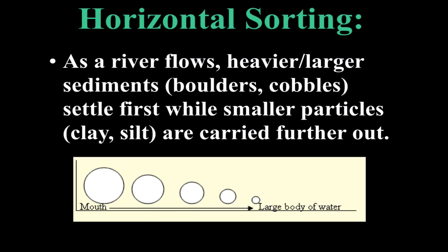The first type of sorting is horizontal sorting. This occurs when a river or stream enters a larger body of water. When it enters a larger body of water, the velocity of that stream decreases. Here we have the mouth of a river entering a large body of water — the velocity decreases.